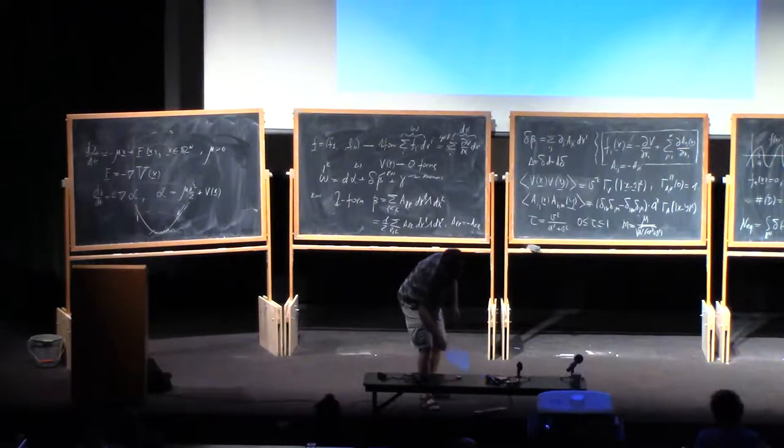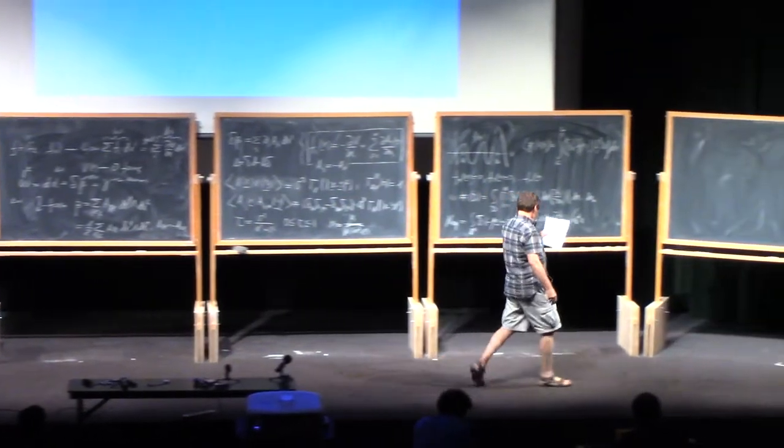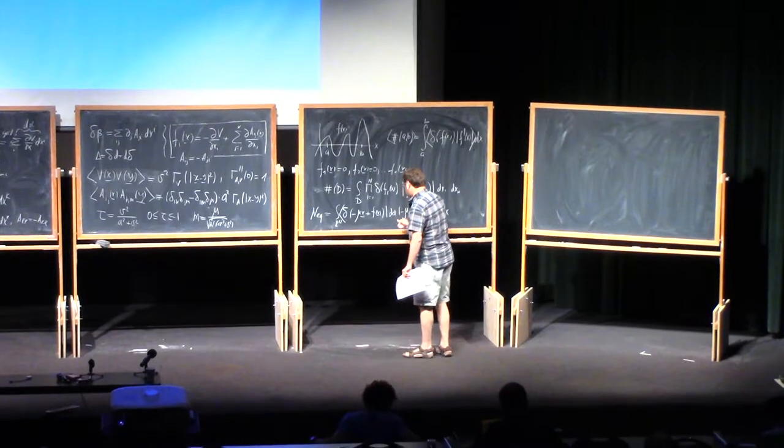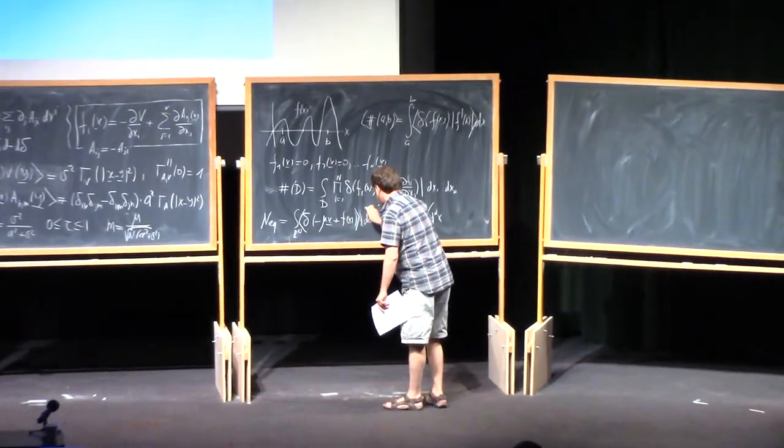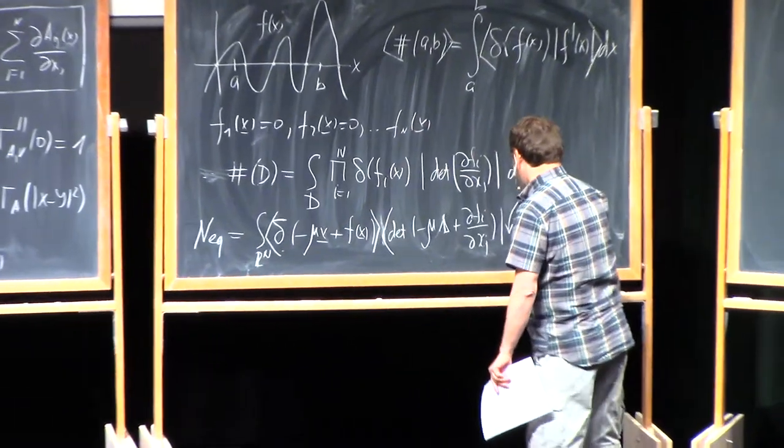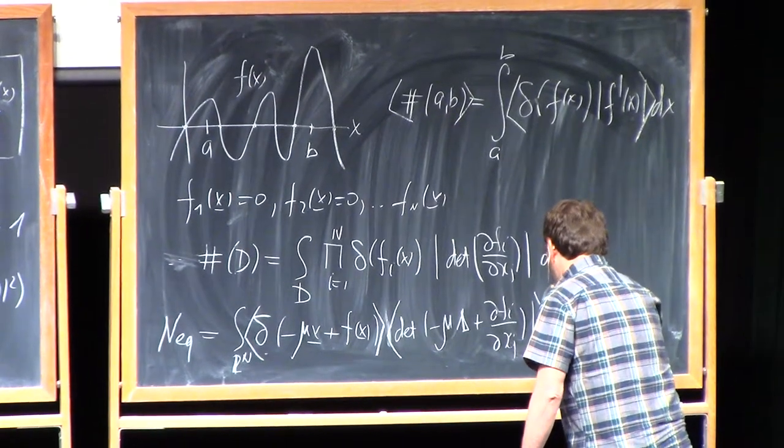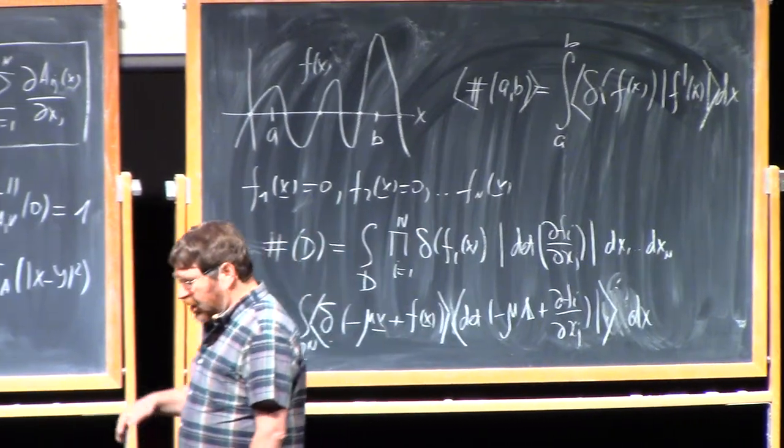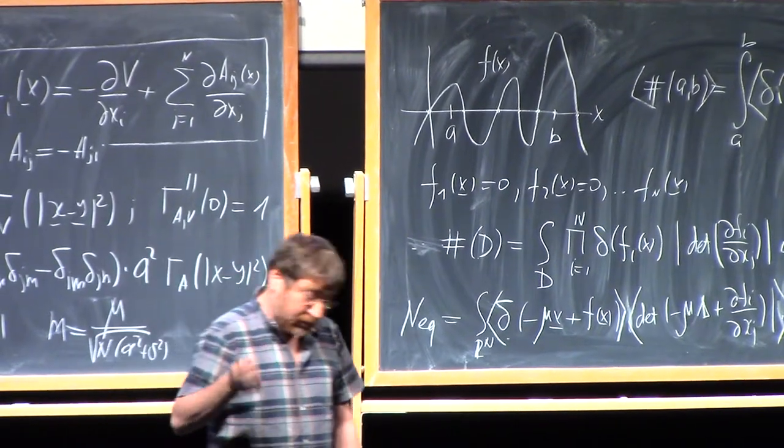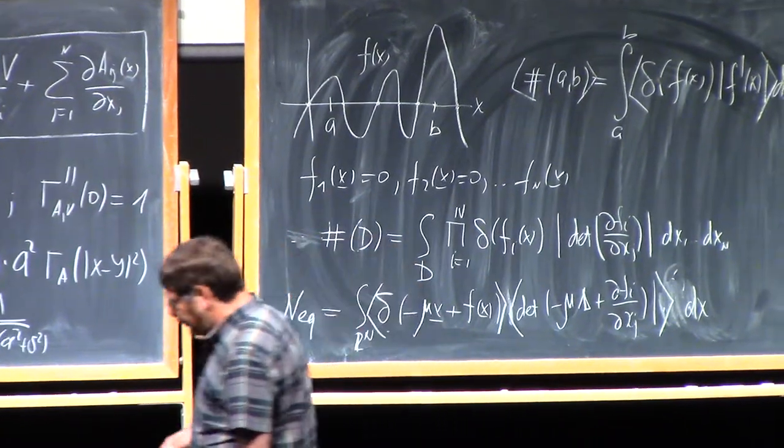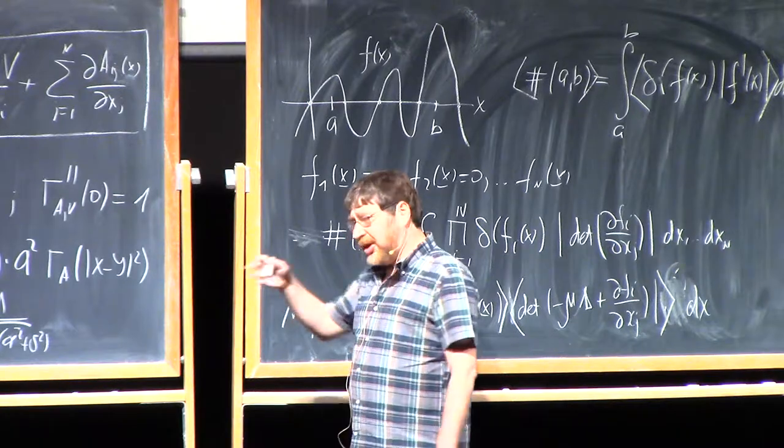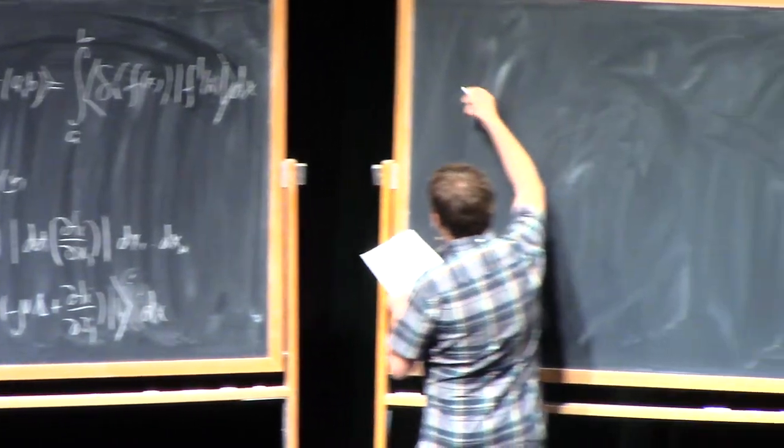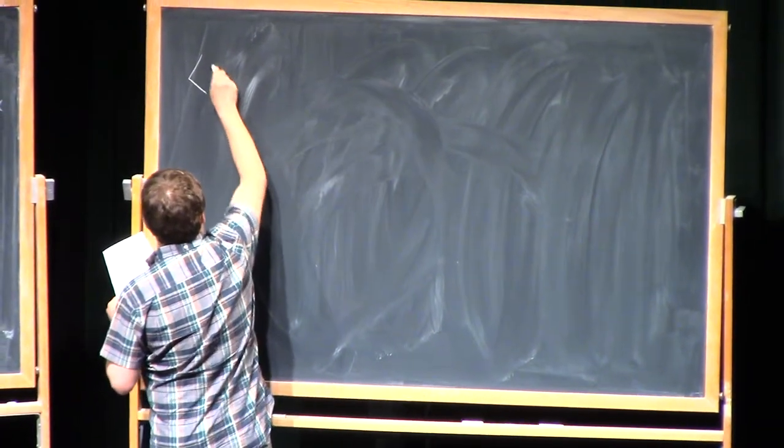So let us now really start doing the computation. I just do what I promised to do, separately averaging the delta functional factor and the Jacobian. I will concentrate for the main part of this lecture, and maybe a big part of the next, on showing this type of computation for the total number of points, then indicate how to deal with the number of stable points. Let us deal with how to average the delta function.